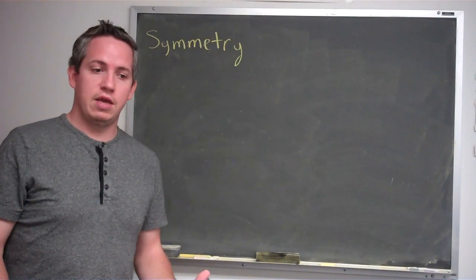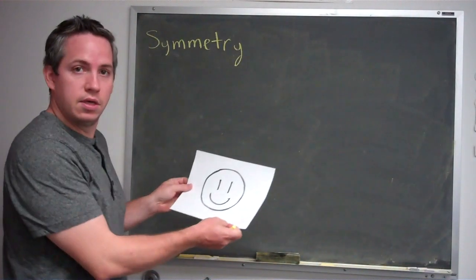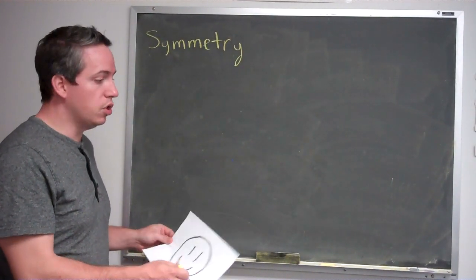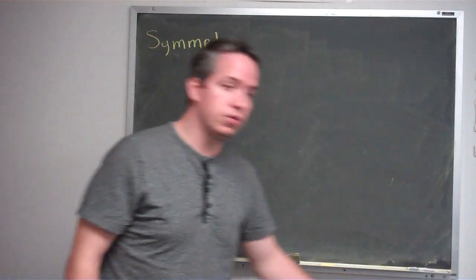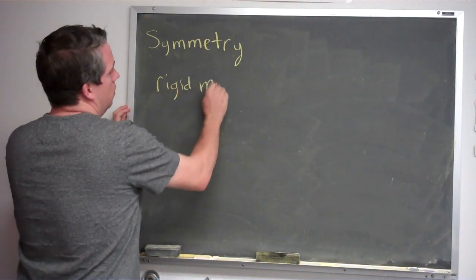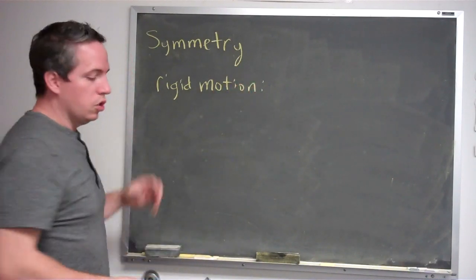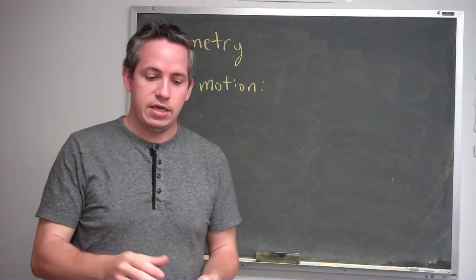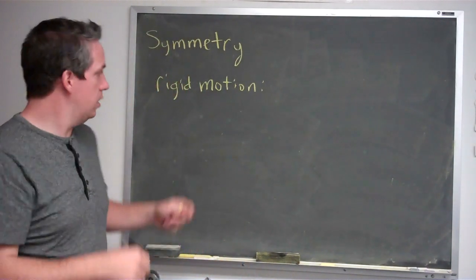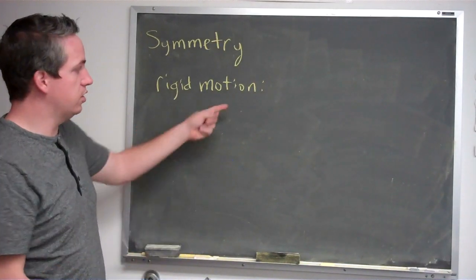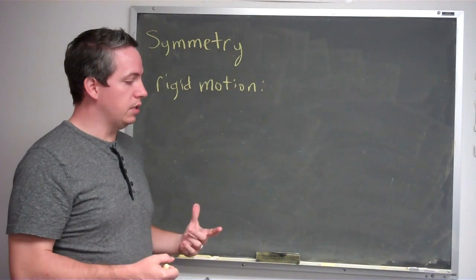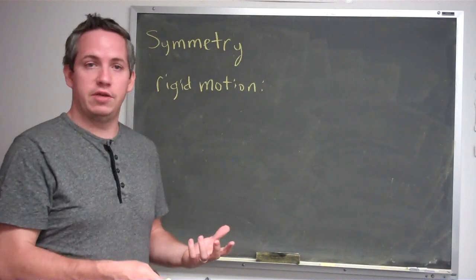Symmetry comes from this idea that if we take an image and we move it around or do something to it, we end up getting the same thing back. We talk about symmetry using what's called rigid motion. Rigid motion is the idea that we're going to take an image and move it in some way without changing the image — it's rigid, it doesn't change, and it's motion. Rigid motion is a movement of an image without changing its size or shape.